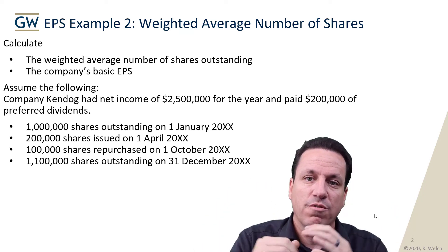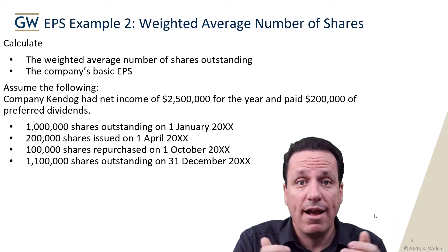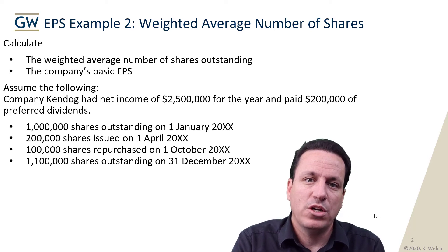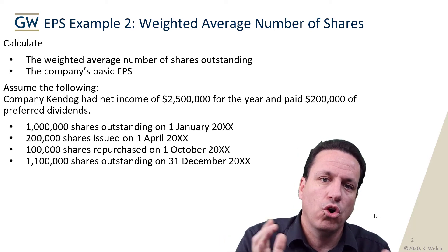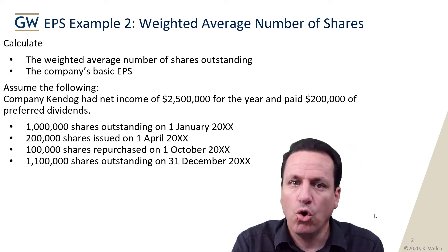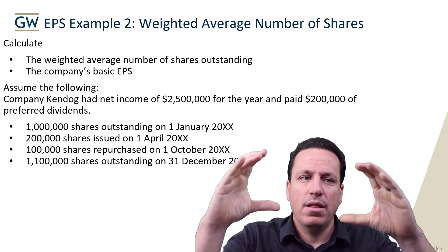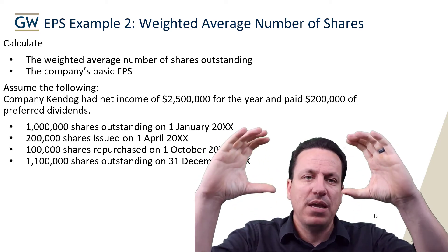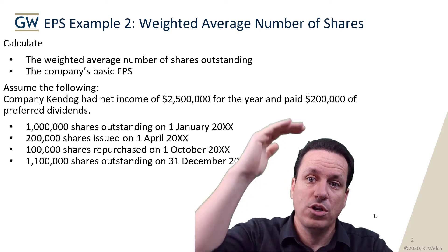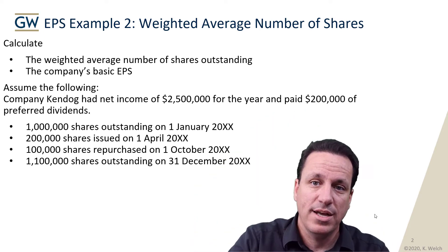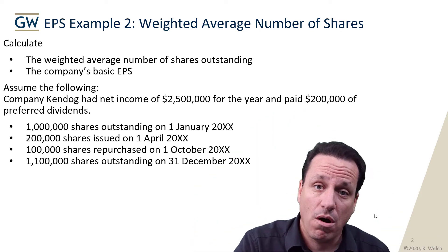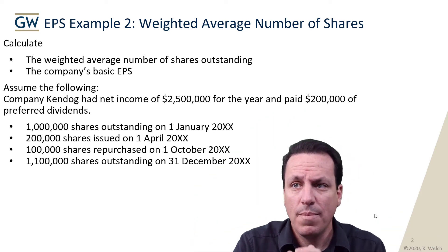Sometimes questions ask for the denominator, which is weighted average shares outstanding. Sometimes questions say, what's the total earnings that should be included in your earnings per share? That would be a question about the numerator — do you know the numerator that's supposed to go in your EPS calculation? And sometimes the questions are, can you just calculate the share?